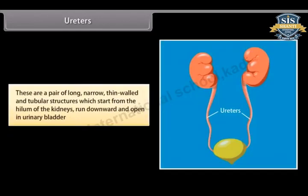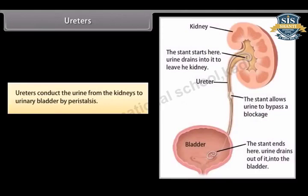Ureters are a pair of long, narrow, thin-walled and tubular structures which start from the hilum of the kidneys, run downward, and open into the urinary bladder. Ureters conduct the urine from the kidneys to the urinary bladder by peristalsis.